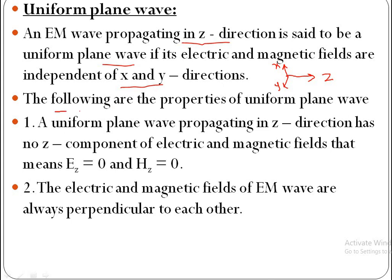Next, the following are the properties of uniform plane wave. First property: a uniform plane wave propagating in the z direction has no z component of electric and magnetic fields. That means Ez is zero, similarly Hz is zero. There is no field component along the direction of propagation. Here the direction of propagation is the z direction, hence along z direction electric and magnetic fields are zero.